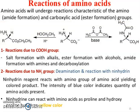Reactions of amino acids — amino acids will undergo reactions characteristic of amino groups and carboxylic acid groups: amide formation and ester formation. You can see here the formation of an ester and the formation of an amide. Reactions due to the COOH group include: salt formation with alkalis, ester formation with alcohols, amide formation with amines, and decarboxylation. Reactions with the NH2 group include deamination and reaction with ninhydrin.